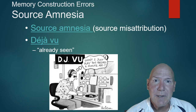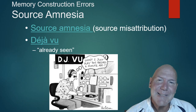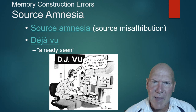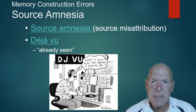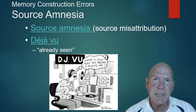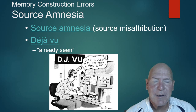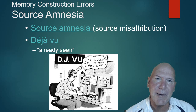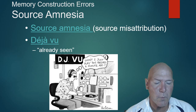Déjà vu means 'already seen' — that eerie feeling of having been somewhere or experienced something before. A likely explanation based on what we know about memory: you're in a city you've never visited, but something there reminds you of a scene from your past, which primes your brain. Your brain then builds a web of associations and creates that sense of familiarity. It's your brain making sense of the situation — not necessarily a past life.